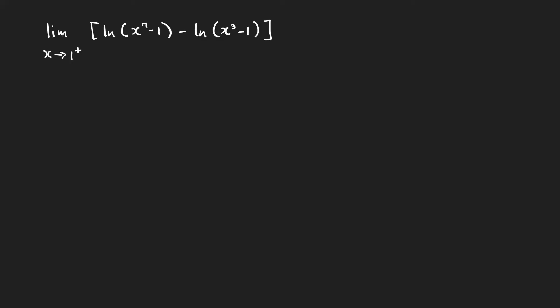Let's evaluate the limit of ln(x⁷ - 1) minus ln(x³ - 1). What is the form of this limit? As x approaches 1 from the right, x⁷ - 1 and x³ - 1 are both approaching 0 from the right. The ln of a small positive number is a large negative number.